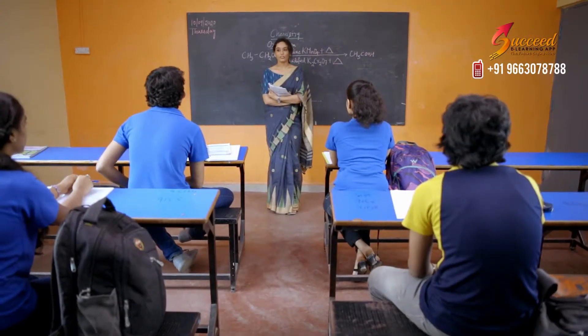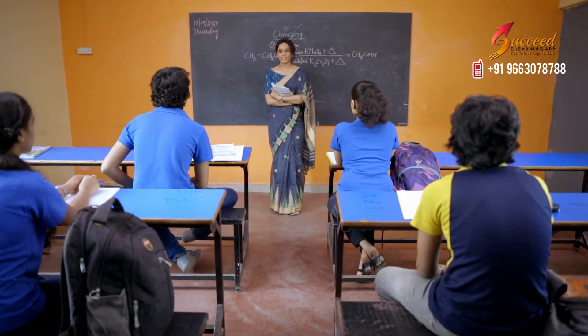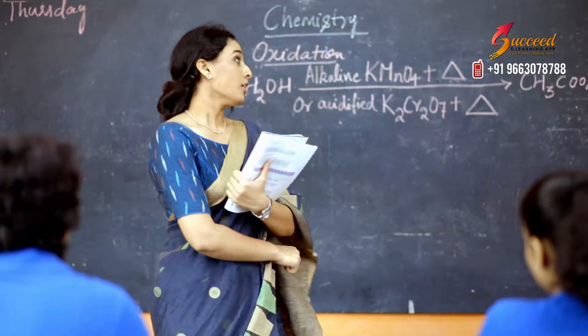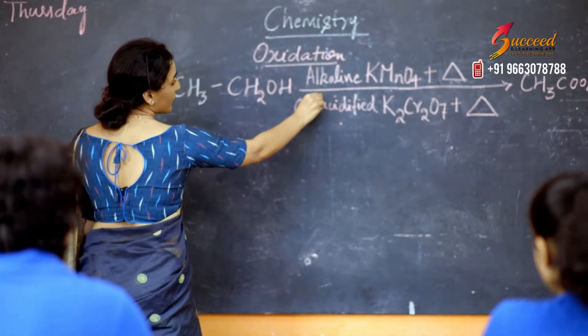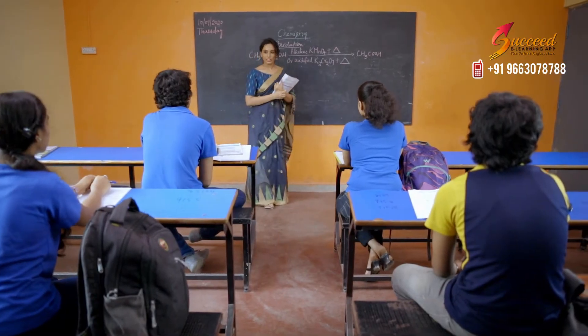Children, today we'll talk about oxidation reactions. With the help of alkaline potassium permanganate, alcohol can be converted to acids. Got it?